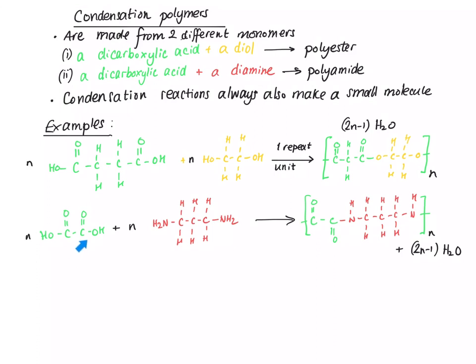Similarly, if we use a dicarboxylic acid and a diamine — remember a carboxylic acid and an amine make an amide — the product we get is a polyamide, and also 2n minus 1 moles of water. We know it's an amide because it's got the amide link here. What happens is we lose the elements that make water — we lose this OH and one of those hydrogens — and that forms this link here.